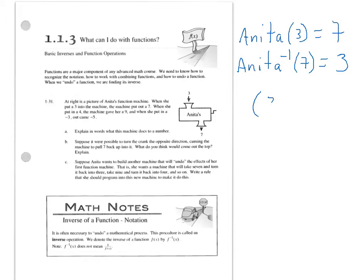So while the starting function gives me the ordered pair (3, 7), knowing that the 3 was the input and the 7 was the output, if I have the inverse function, I just reverse the order of those ordered pairs.